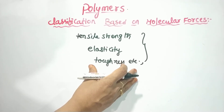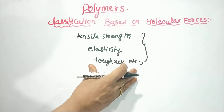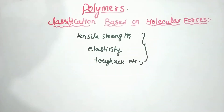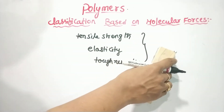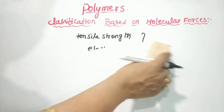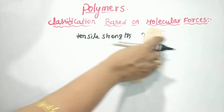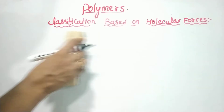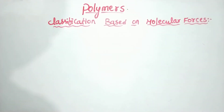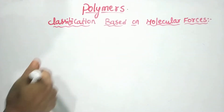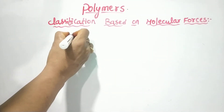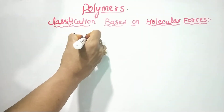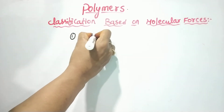We have different types of polymers. There are four types of polymers. The first one is elastomers.